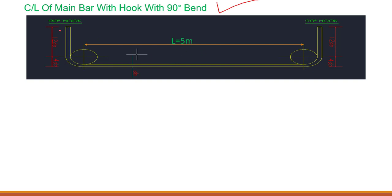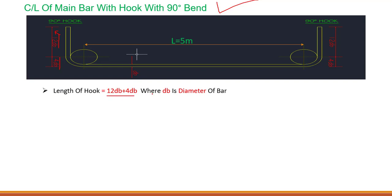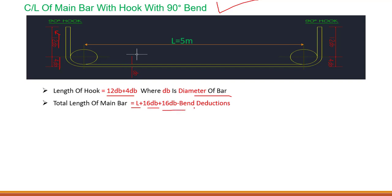Now let's look at the 90 degree bend. For the 90 degree hook we take 12dB plus 4dB, making a total of 16dB. Note that you need to refer to the structural drawings and journal notes to check the specific details, as these values are per structural engineer's suggestion and are not absolute standards. The total length formula is: length plus 16dB for one hook plus 16dB for the other hook, minus bend deductions at both ends.